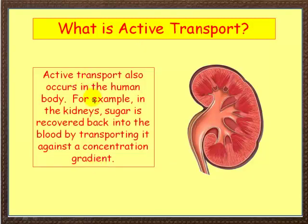Active transport also occurs in the human body. For example, in the kidneys — this will come up in a later video — you recover sugar from the blood by transporting it against a concentration gradient. You don't want sugar being released into the urine, so all the sugar is recovered by active transport against a concentration gradient back into the blood.